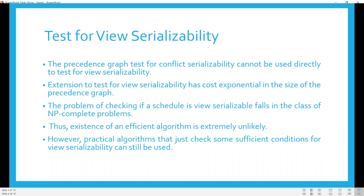As we have seen for conflict serializability, we checked whether a schedule is conflict serializable by means of a precedence graph. But that precedence graph test cannot be used directly to test view serializability. The problem of checking whether a schedule is view serializable falls in the class of NP-complete problems, so the existence of an efficient algorithm is extremely unlikely. But still we can check for sufficient conditions for view serializability.